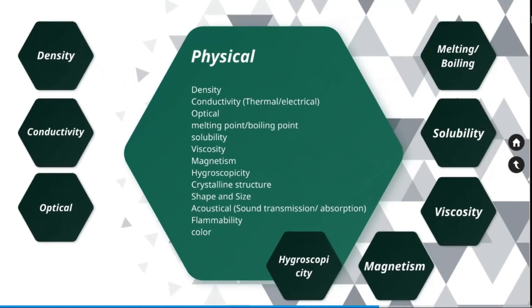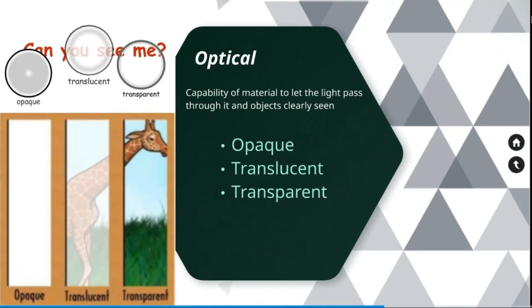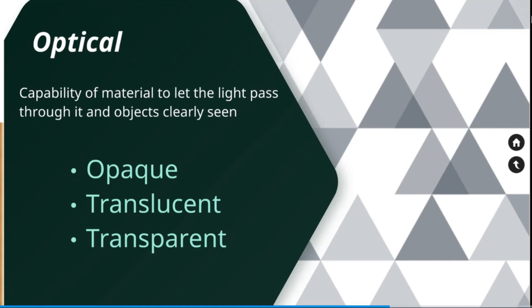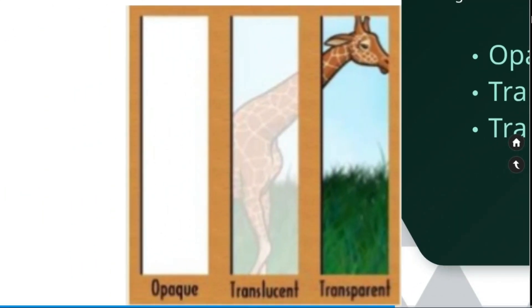Next optical property is the capability of a material to let the light pass through it and objects clearly seen. A material can be opaque, translucent or transparent. Through transparent material, we will be able to see any object very clearly. Whereas if you see through any opaque object, you will not be able to see anything. If you see through translucent material, you will see the object partially. You will not be able to see the object clearly.